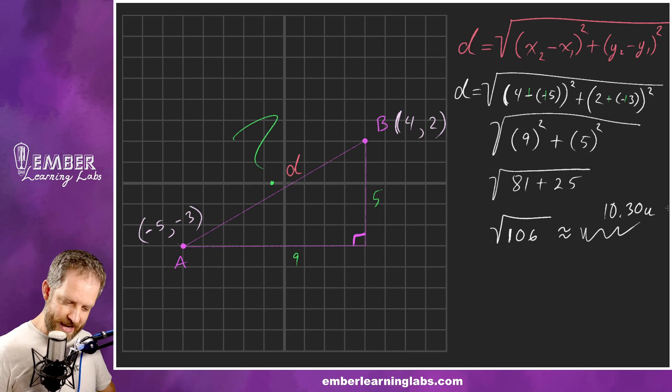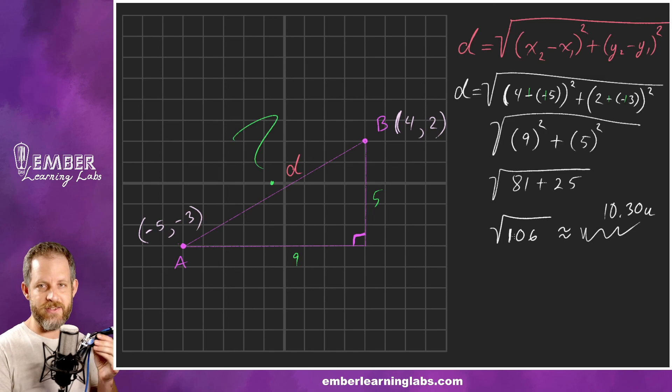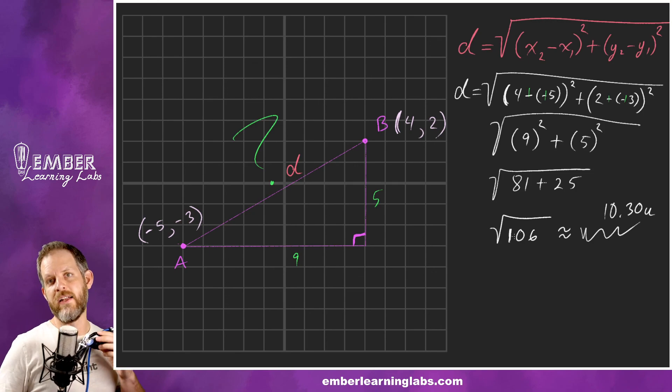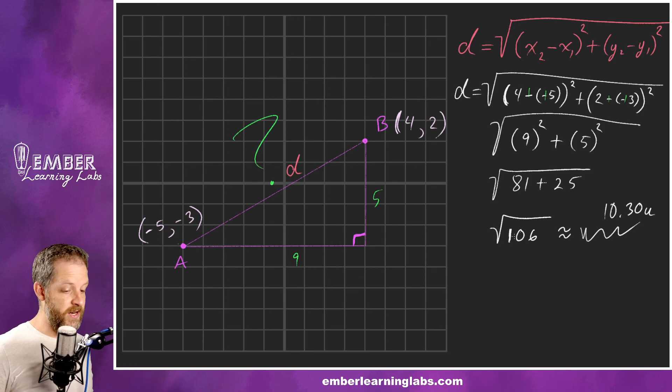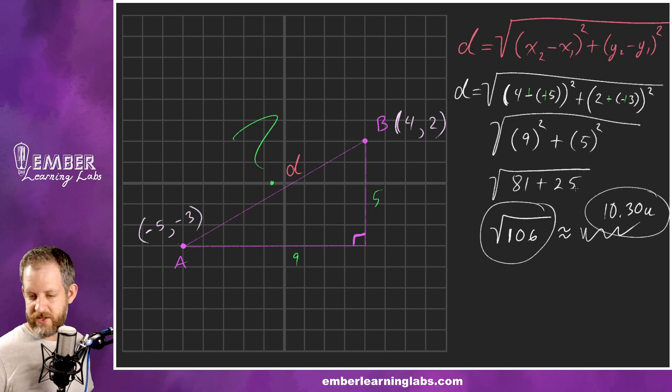If you wanted an exact answer you could try to reduce this. Unfortunately there aren't any perfect squares that go into 106 - not 25, not 4, not 16, definitely not 100. So you could actually, if it wasn't a word problem, you would want the exact answer and you'd just circle that and move on with your life. If it was a word problem or a physics problem, you would get your decimal equivalent answer.